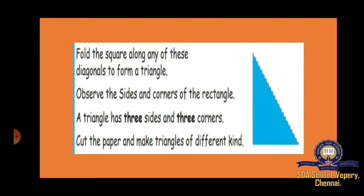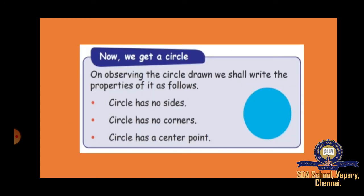Next, triangle. A triangle has three sides and three corners. Next, circle. A circle has no sides and no corners, but it has a centre point.